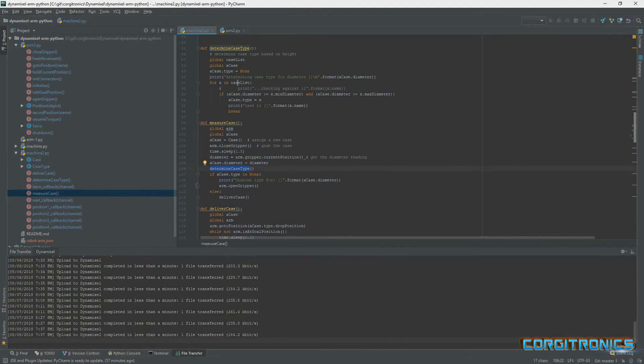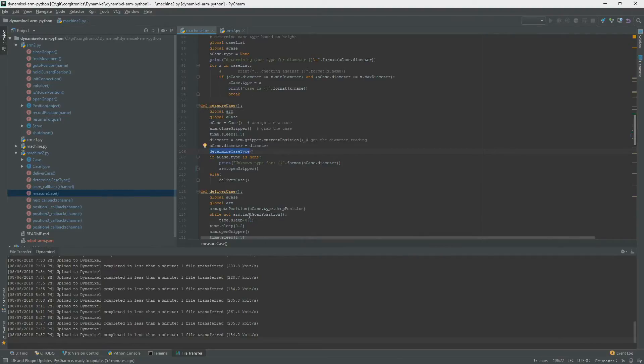And from that, which it's using a small list of calibers, a small list of cases that knows the diameters of, and it also knows which position, button one, two, three, or four that it should be carried to. And then it delivers the case once it's figured it out.